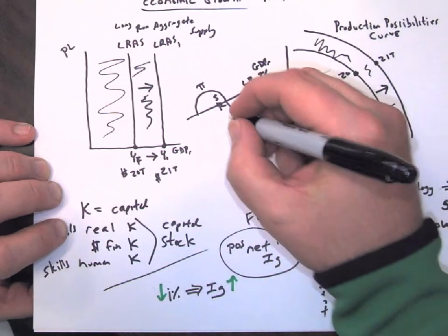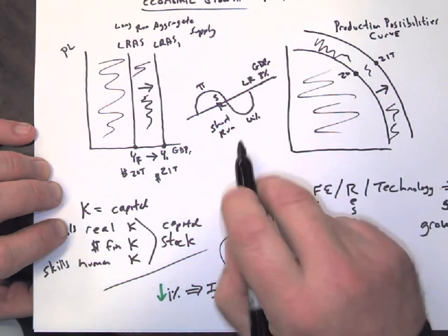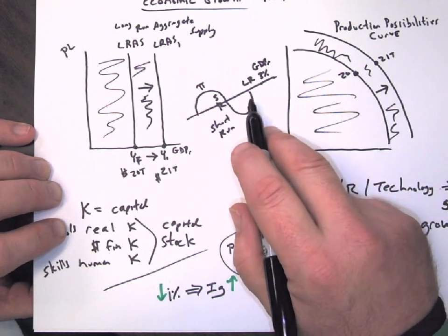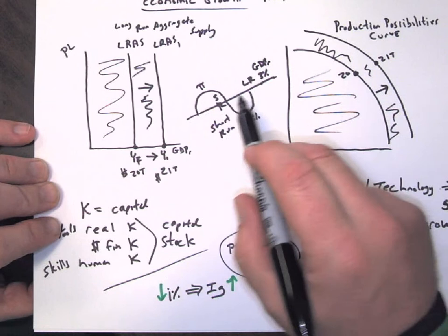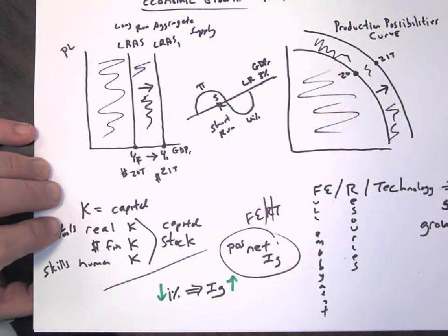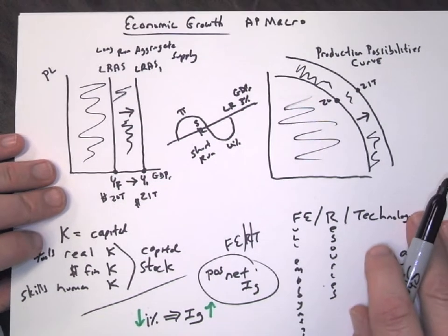Those are all temporary or short-run cycles in our economy. So those ups and downs with the automatic stabilizers and things like that, those are all going to be how we cruise along this path of 3% growth in the economy. So I hope that helps a lot in solving and reviewing economic growth.